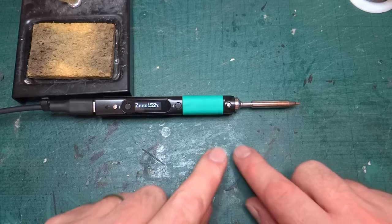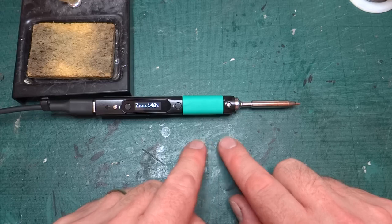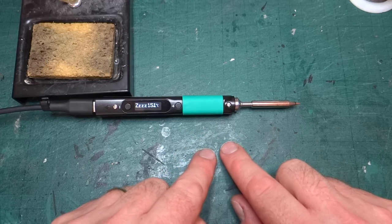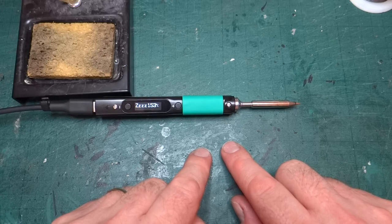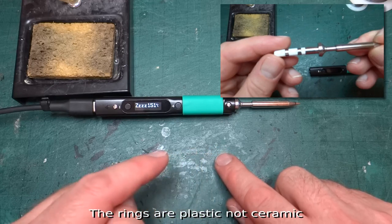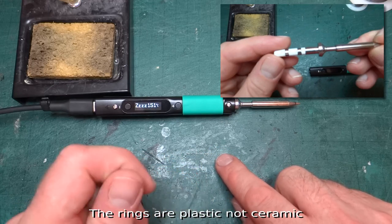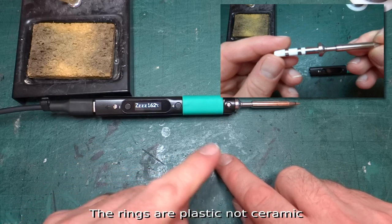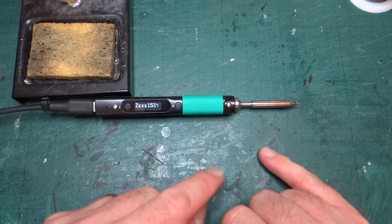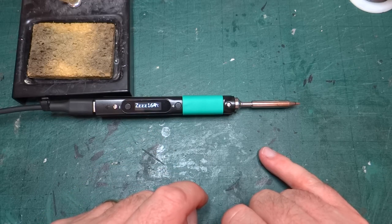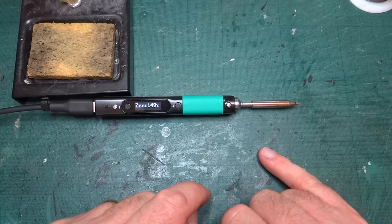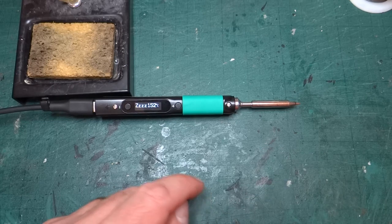The tips in this I think are a bit more expensive to replace, partly because some of the control stuff is inside the tip as far as I understand. You can see when we had the tip out it's got ceramic rings a bit like you find on an audio jack plug. I think that's because it can do some of the sensing in the tip itself rather than in the body of the soldering iron.